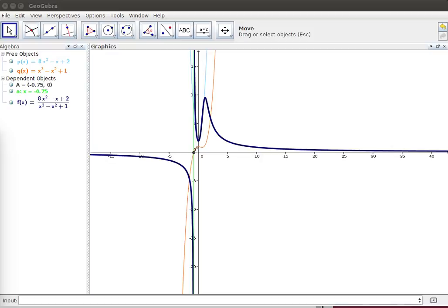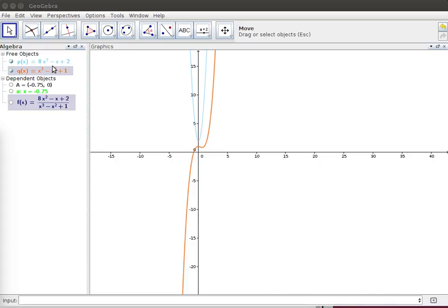Now let's consider the reciprocal of this rational function. I've turned off the view to everything except our two original functions, but now we're going to look at Q divided by P.